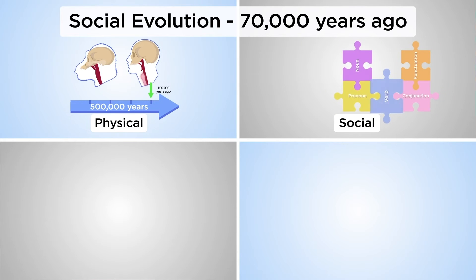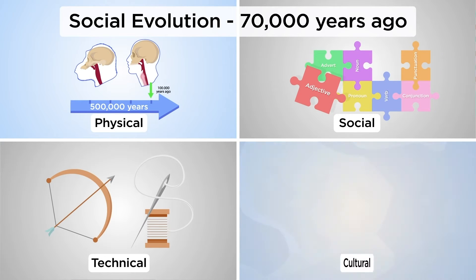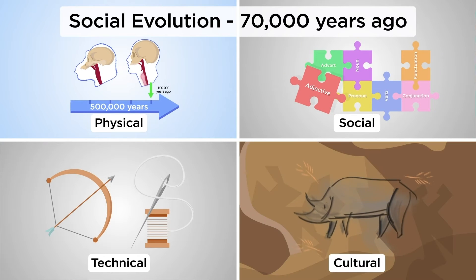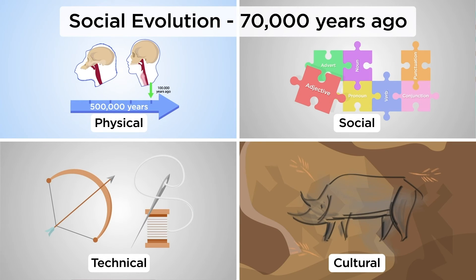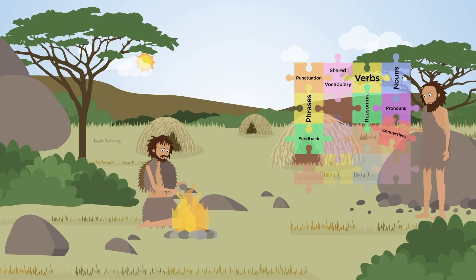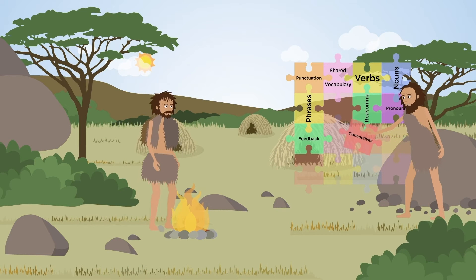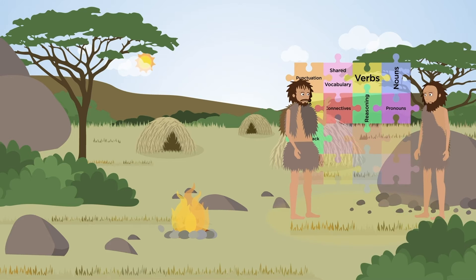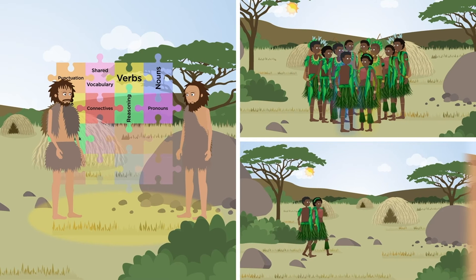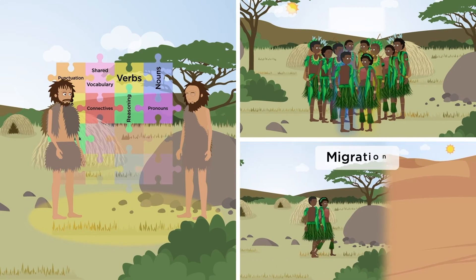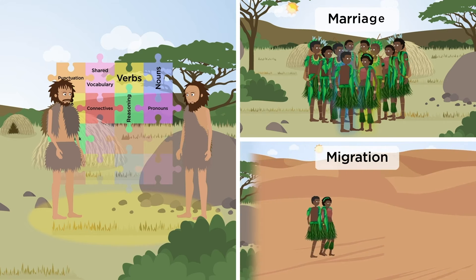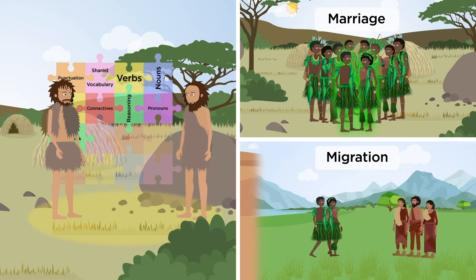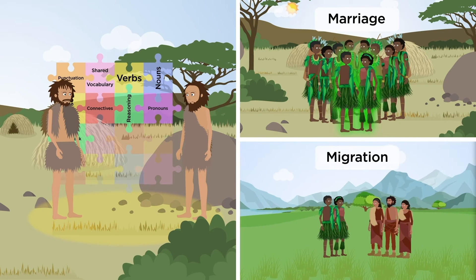In social evolution, language and institutions are formed through group decisions. A key moment in social evolution was the development of syntax for complete sentences, agreed upon by the community. Group institutions of language, such as migration and marriage, then spread rapidly across continents.